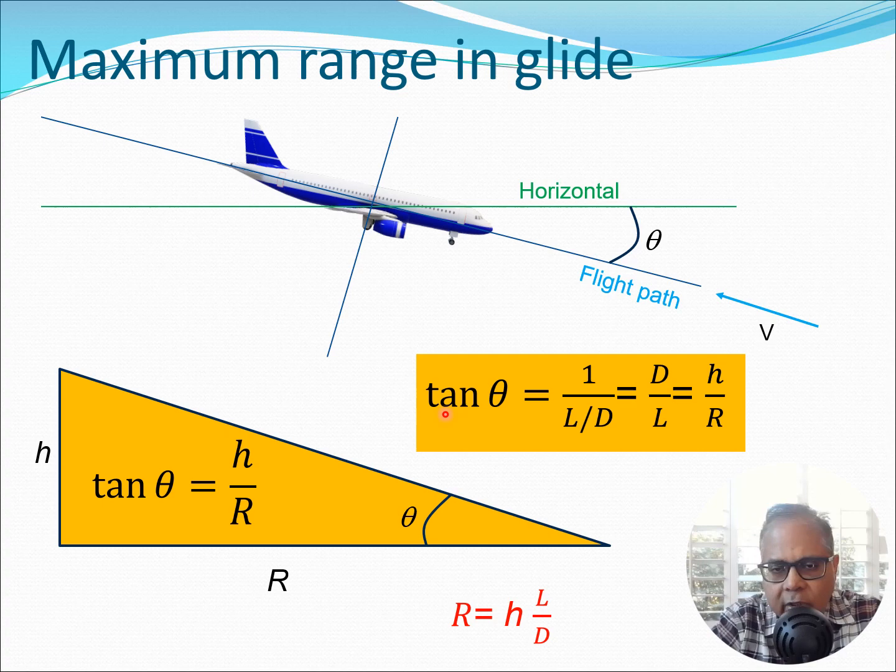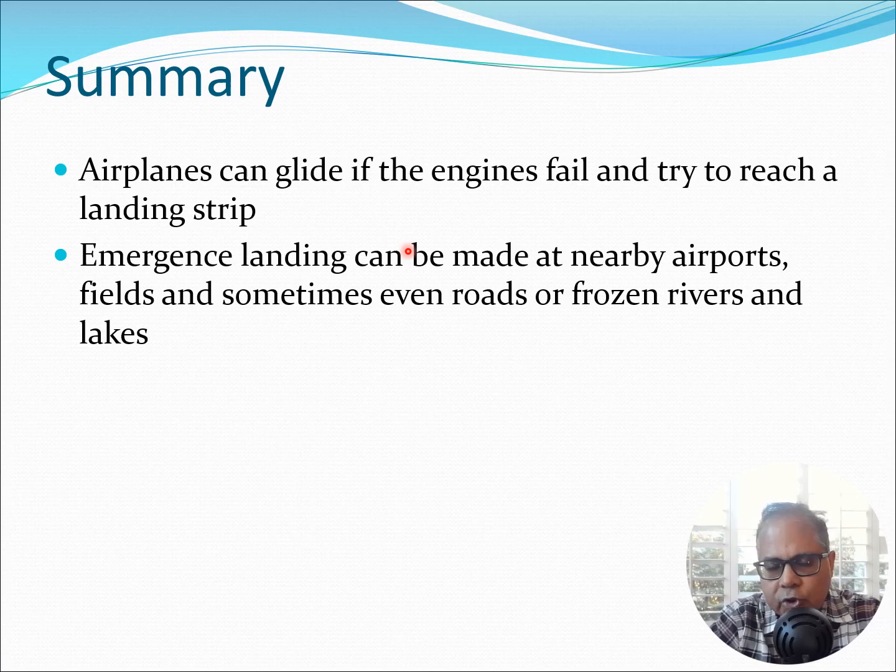So now what I can do is I can take the two equations for tan theta. One equation was 1/(L/D) = D/L and I can equate it to the second equation I got which is h/r. Do remember h is the height at which the airplane is flying and r is the range or the distance from the current point to maybe the landing point at some distance from the aircraft. So I can immediately write r = h(L/D) from this equation here.